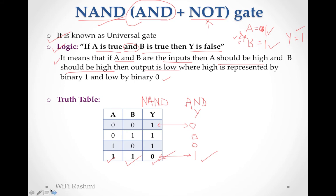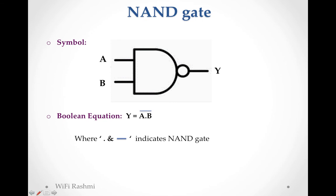Before going to NAND gate you should learn AND and NOT first, since NAND is a combination of AND and NOT. Now see the symbol: AND gate symbol is a D-like structure. For NAND gate, there is one bubble added at the output which represents NOT. Adding this NOT to AND gate makes it NAND gate.